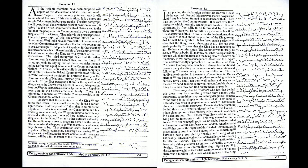In this particular declaration, nothing very much is said about the position of the king except that he will be a symbol. It has been made perfectly clear that the king has no functions at all — he has a certain status. The Commonwealth itself as such is not a body; it has no organization through which to function, and the king also can have no functions.